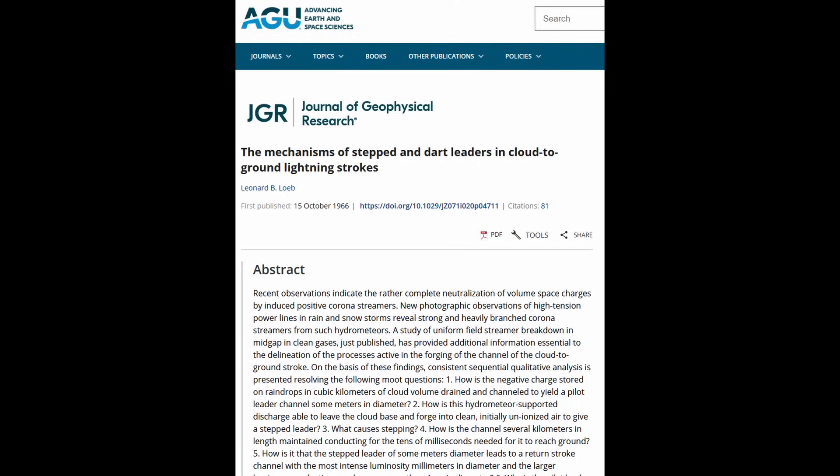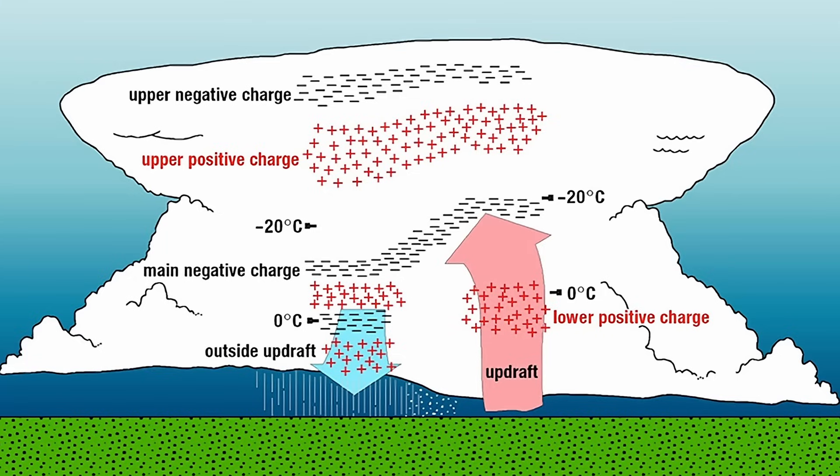Loeb has theorized that a collection of positively charged raindrops carried by an updraft towards a negative charge center could initiate positive streamers propagating upwards and outwards towards the negative charge.